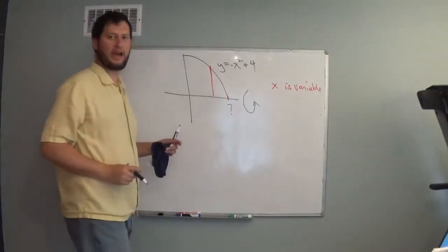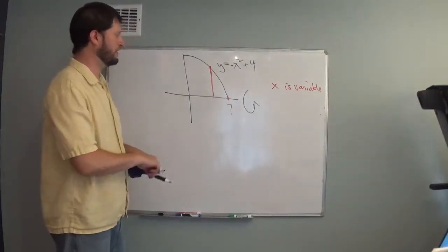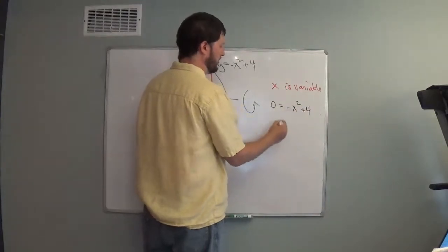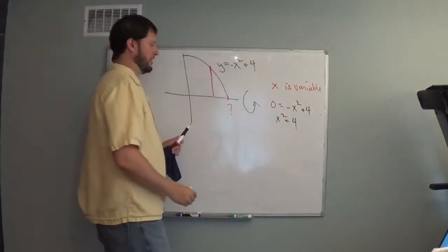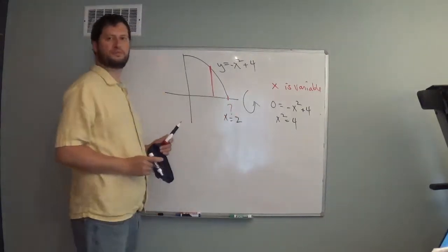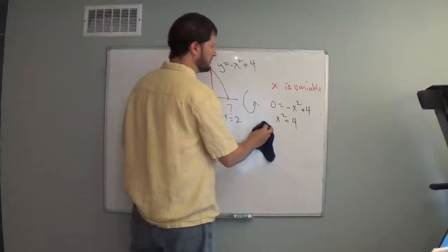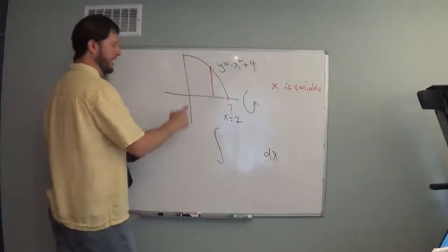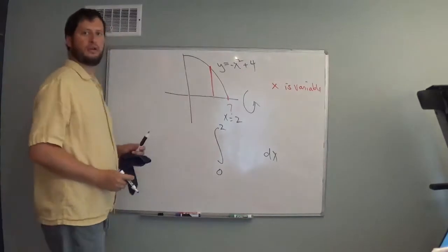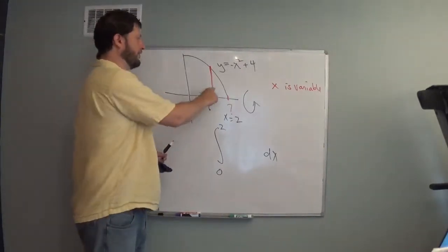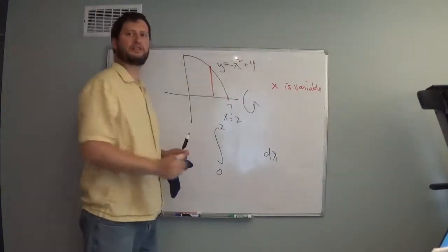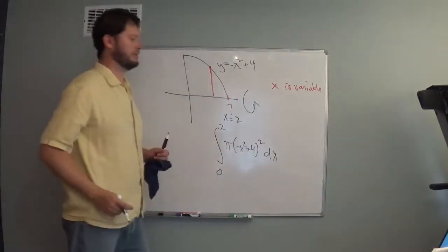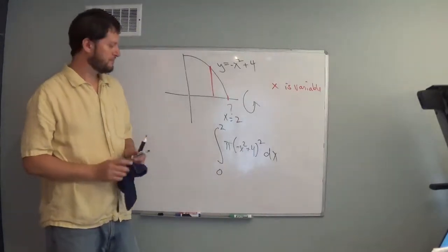We need to figure out the boundary point. This happens when y equals 0: setting 0 equal to negative x squared plus 4 gives x squared equals 4, so x equals plus or minus 2, meaning this is x equals 2. We integrate with respect to x from 0 to 2. Pi r squared — the radius is the function height — since x is already the variable, pi times negative x squared plus 4, squared. That's pi r squared. And that's the answer.